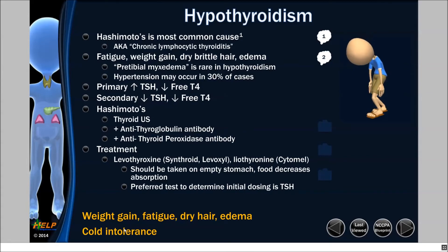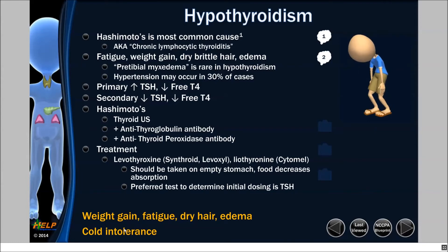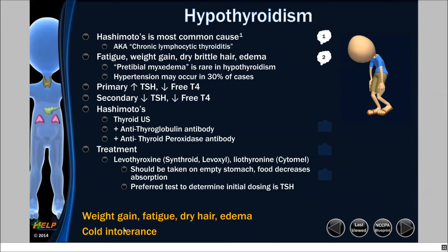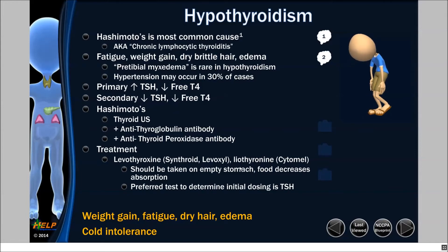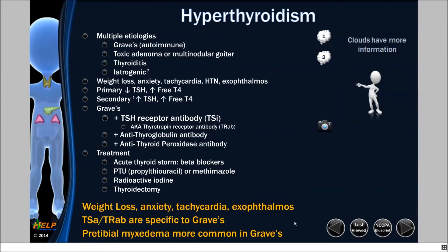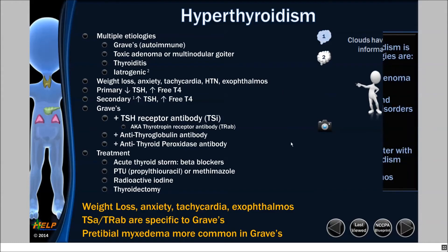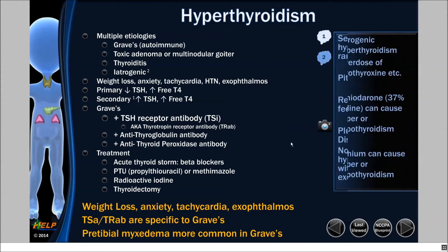You can use this slide a few different ways. The fact that it's interactive means that in the beginning you most likely need all the information, but towards the end of your study, when you're quickly reviewing, maybe you're just looking at the yellow points or just the white points. When you're done, you'll go on to the next set — now we have hyperthyroidism.